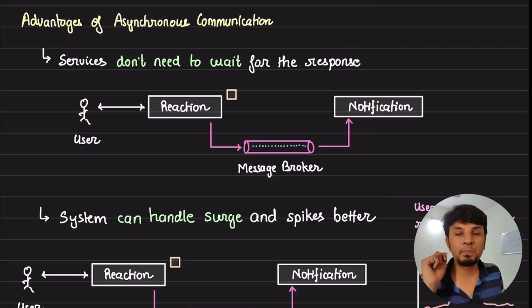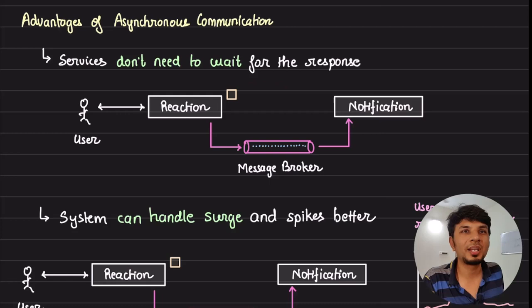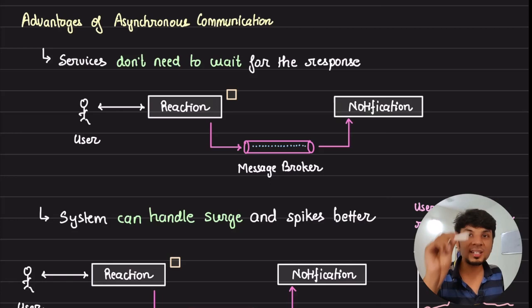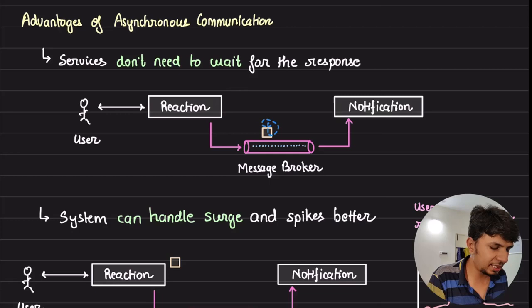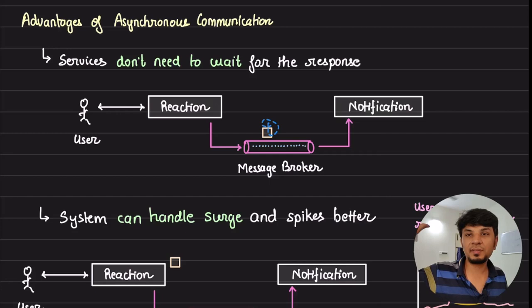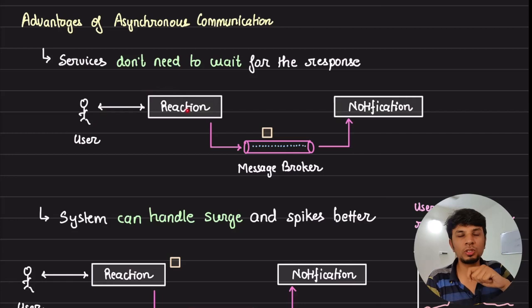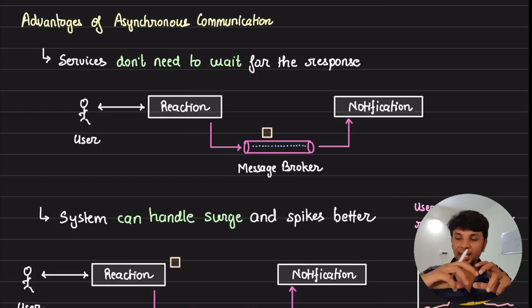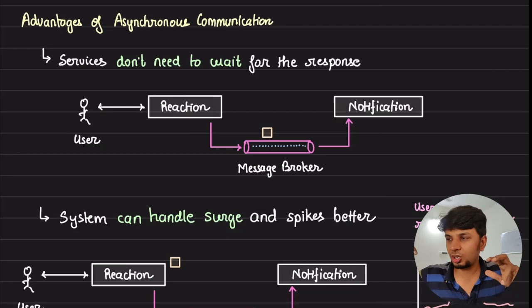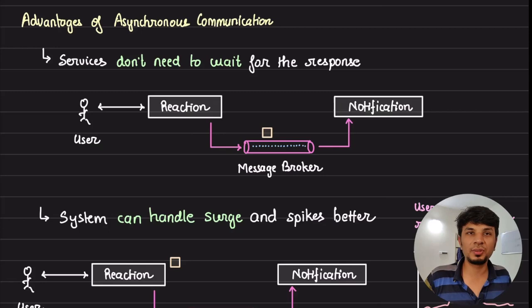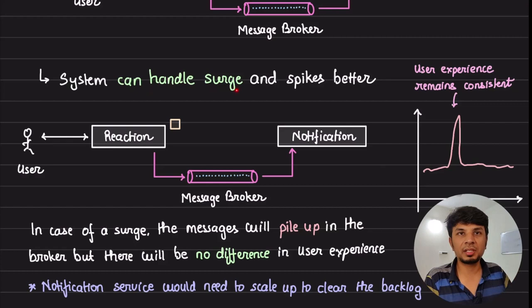The biggest advantage of asynchronous communication is that services don't need to wait for a response. Instead of the reaction service waiting on the notification service, it simply puts a message in the broker and is done. The notification service's job is to pull that message and send the notification independently. This means the API response time your end user sees is very low — the reaction service just updates the database, sends a message, and done, without the heavy lifting of the notification process.